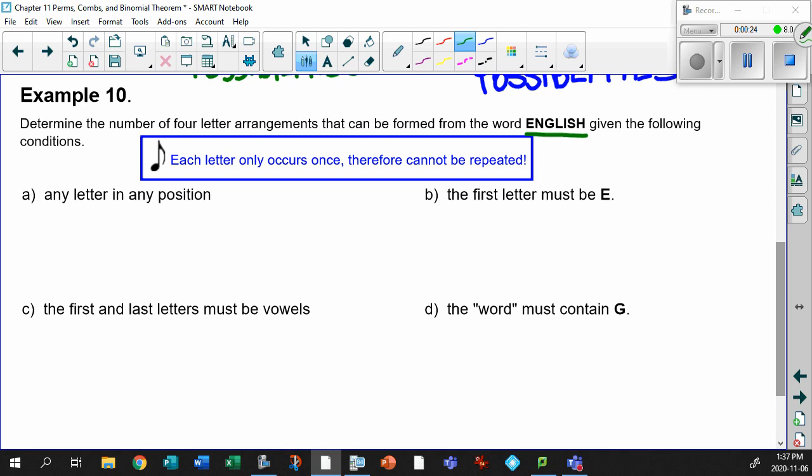Remember, look at the word English. There's no repeats in here. There's no repeating letters. You've got one, two, three, four, five, six, seven. You're dealing with seven letters. That's really important to understand.